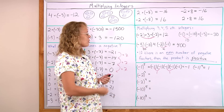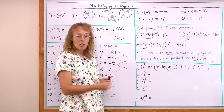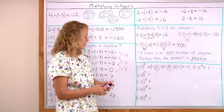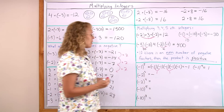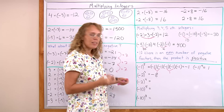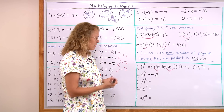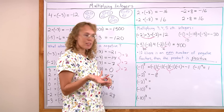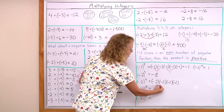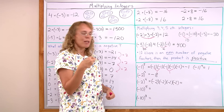Negative 2 to the third power is negative 2 times negative 2 times negative 2. Is that an even or odd number of factors? It's an odd number, so the answer will be negative. Other than that, I just multiply 2 times 2 times 2, which equals 8, so the answer is negative 8. Over here, negative 2 to the 4th power is negative 2 times negative 2 times negative 2 times negative 2. There's an even number of factors, so the answer will be positive. You can pair them — each pair gives a positive answer — so the outcome is positive. 2 times 2 times 2 times 2 is 16.